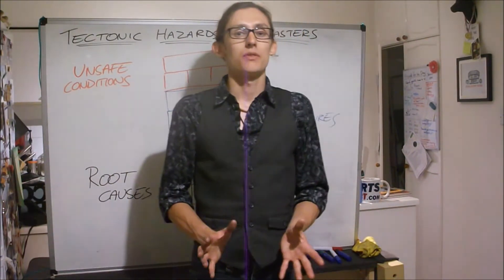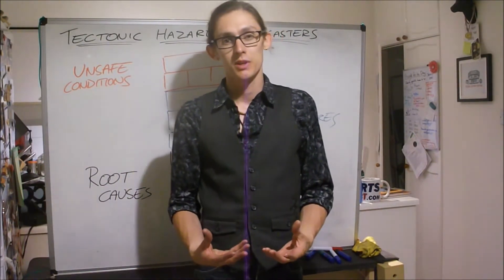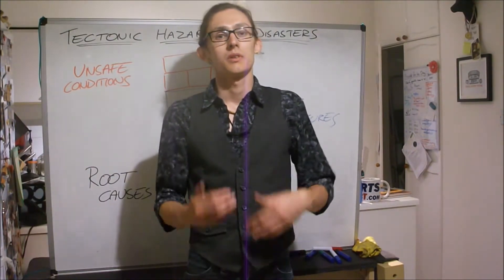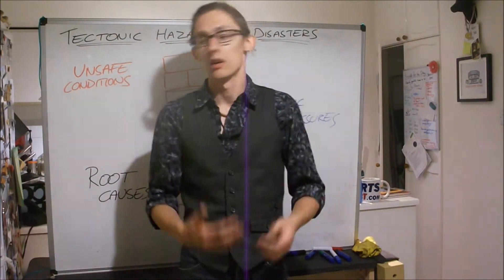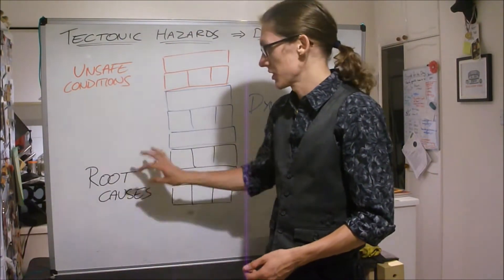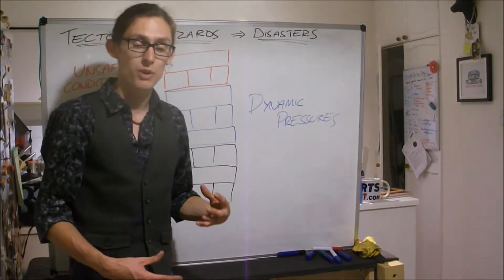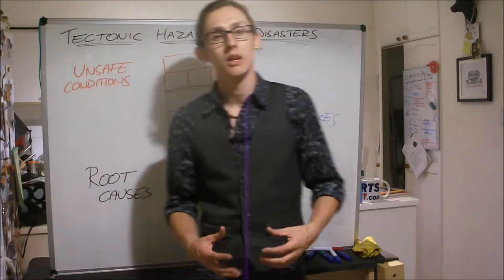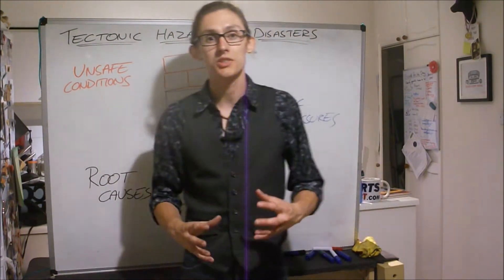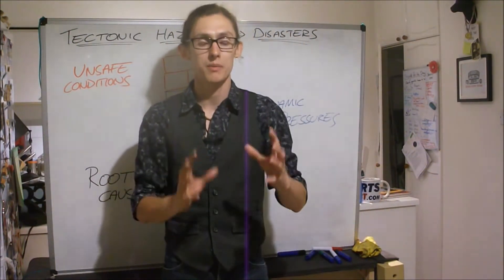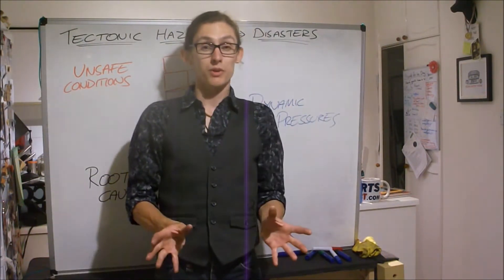When we're thinking about vulnerability, we need to think about how an area or a group of people becomes vulnerable. It doesn't just happen overnight, it happens through a process, through root causes that set off the chain, then through dynamic pressures which are slightly shorter-term stresses put onto an area, followed by unsafe conditions. So once they've already become vulnerable, they become less safe. Let's work through these ideas.